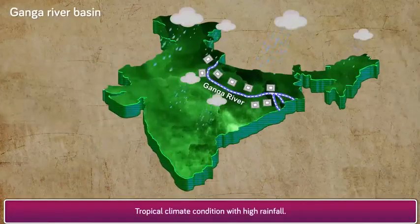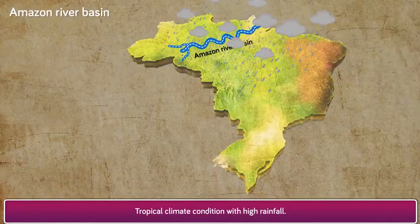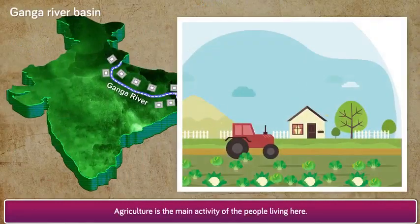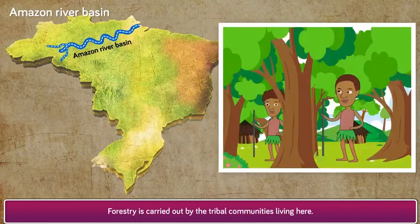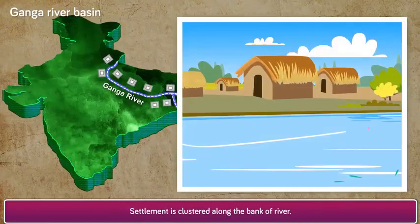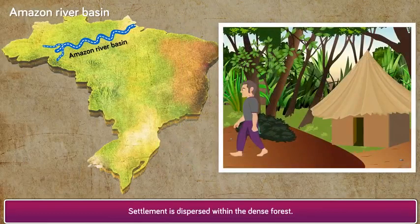The Ganga basin has tropical climate conditions with medium rainfall. Agriculture is the main activity of the people living there. In contrast, forestry is carried out by tribal communities living in the Amazon basin. Settlements along the Ganga are clustered along the bank of the river, while settlements in the Amazon are dispersed within the dense forest.